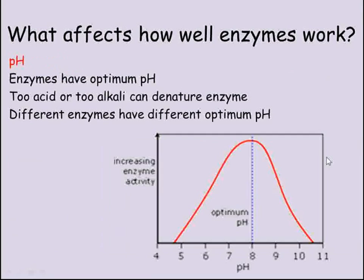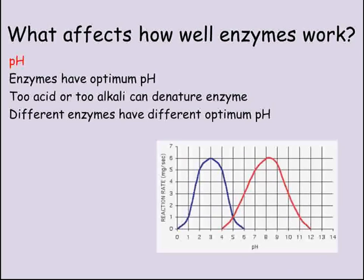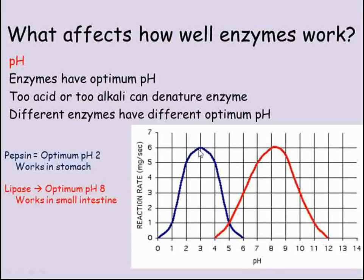pH has a similar effect to temperature — enzymes have an optimum pH, either side of which the enzyme will be less effective. Whilst all enzymes in humans will have a very similar optimum temperature around 37 degrees Celsius, there's more variation in optimum pH. For example, pepsin and lipase are two enzymes involved in digesting food. Pepsin has an optimum pH of 2, so it works best in the strongly acidic conditions found in the stomach. Lipase has an optimum pH of around 8, so the stomach acid needs to be neutralized by bile before it's able to work well in the small intestine.